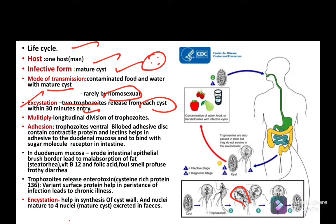Trophozoites multiply by longitudinal division and then undergo adhesion. The trophozoite's ventral side has a bilobed adhesive disc consisting of contractile protein and lectin, which helps adhesion to the intestinal mucosa and binding with sugar molecule receptors in the intestine. In the intestinal mucosa, it erodes the epithelial brush border layer, leading to malabsorption of fat, vitamin B12 deficiency, and folic acid deficiency.